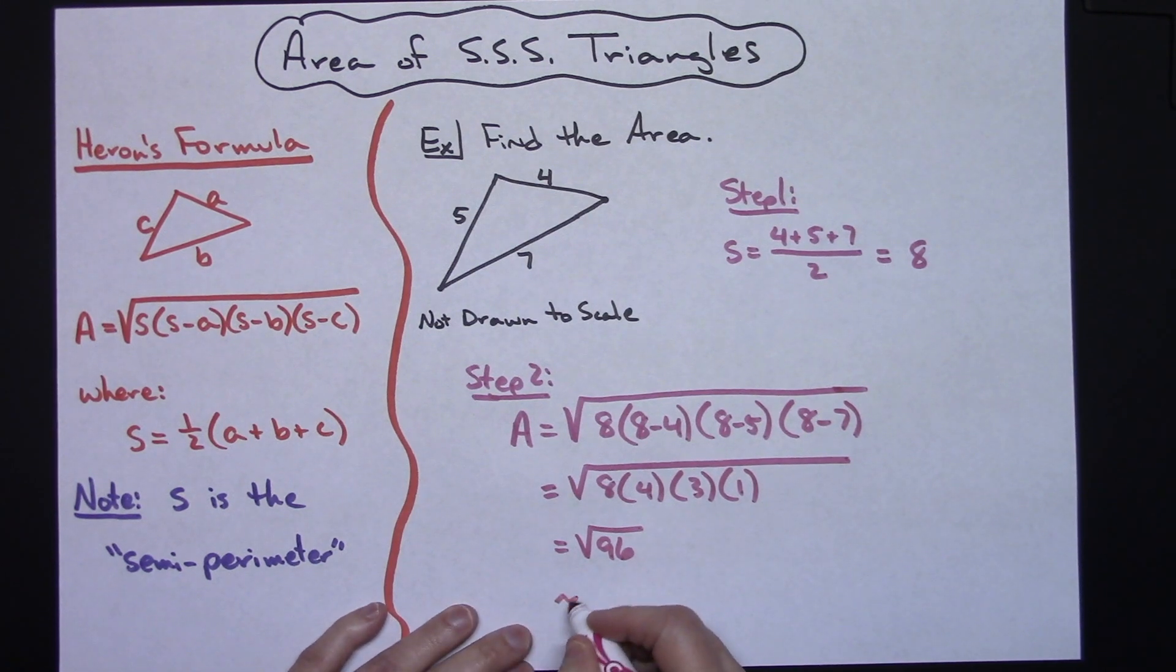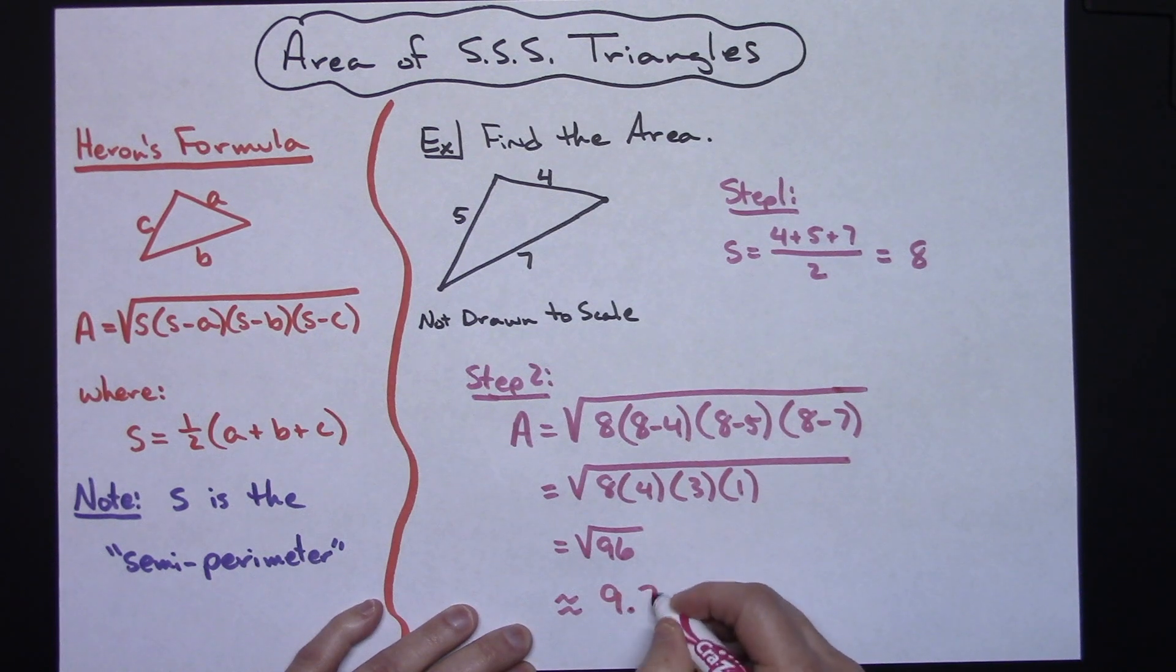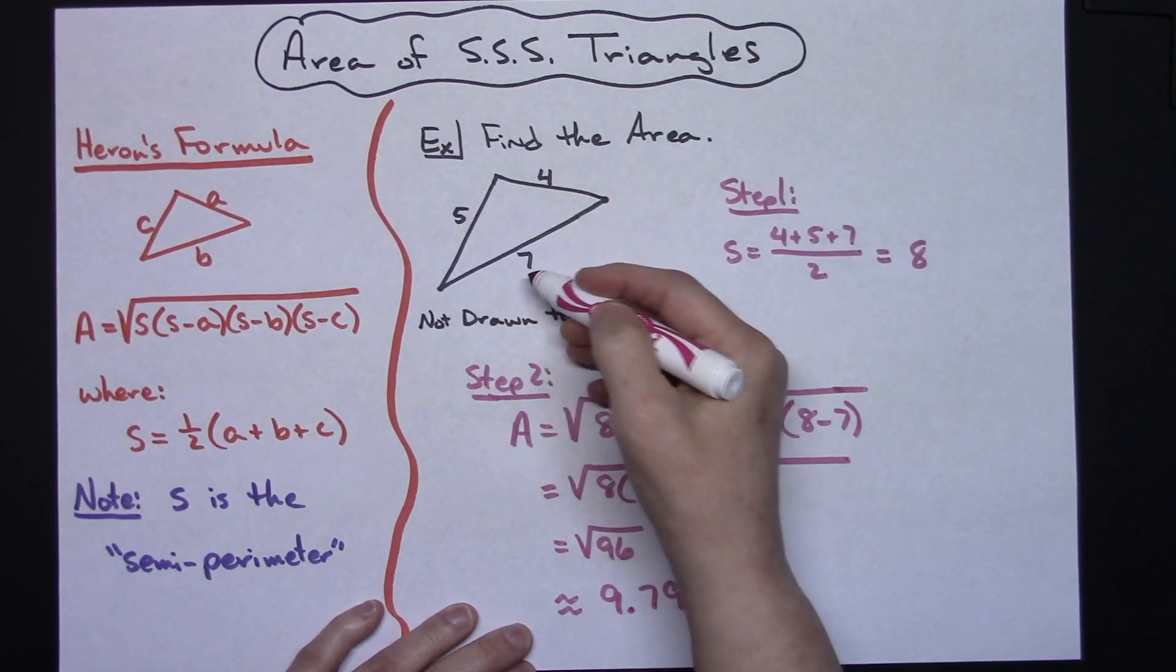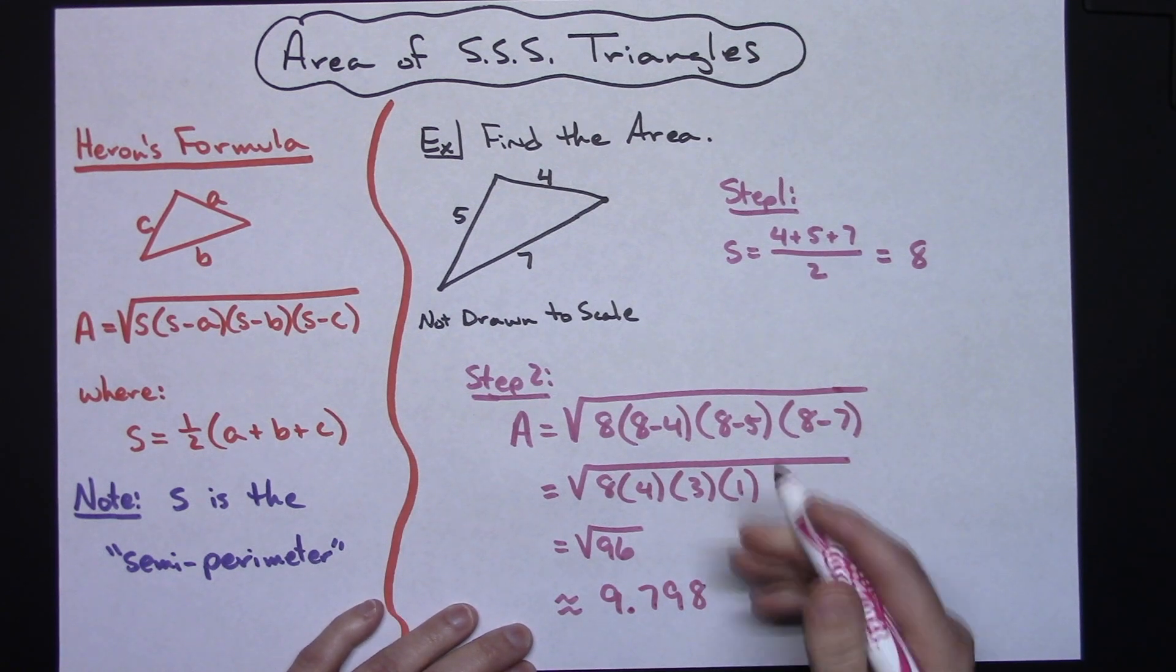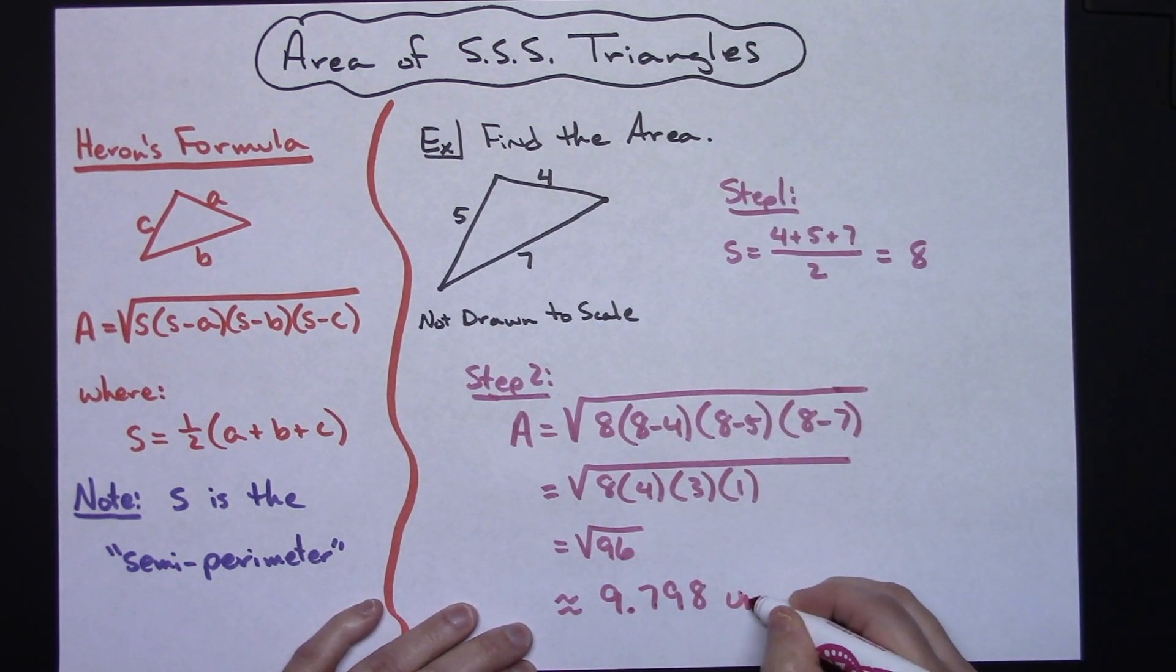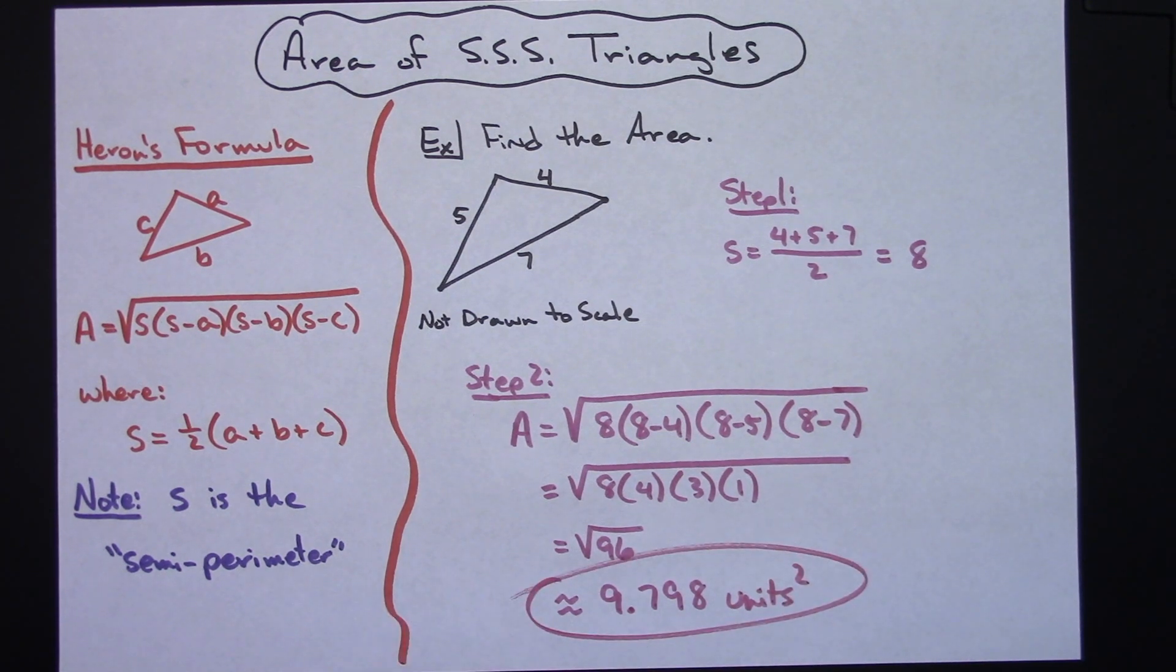You can either simplify that square root or use a calculator to get the decimals for that. As a decimal approximation this is going to be like 9.798. Since the sides are not labeled in this example but yet I am finding area, I would probably go ahead and label it units squared just so that the person can tell that that value actually is an area value.